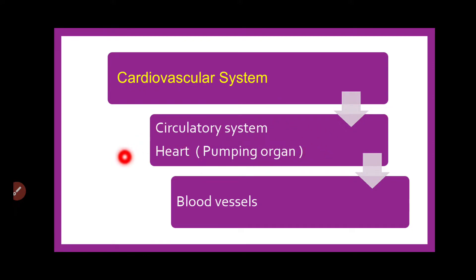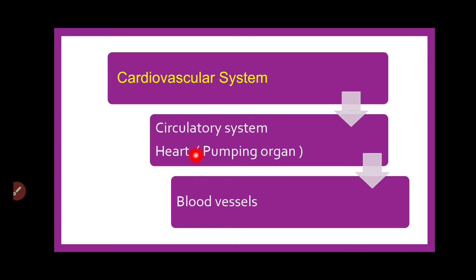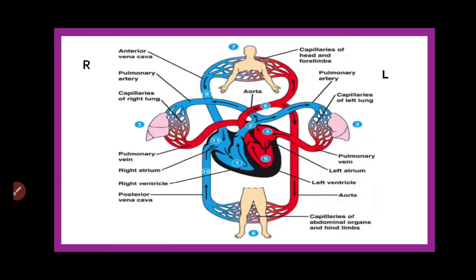Heart is the pumping organ of the body. The circulatory systems — like the systemic and pulmonary circulation — involve all blood vessels carrying blood from the heart to the body and to the lungs, and again from the body to the heart and from the lungs to the heart. This cycle continues. We are going to talk about this in detail in the coming part on systemic and pulmonary circulation, but to talk about the introduction first, we will go through the heart and blood vessels and how they are interlinked.